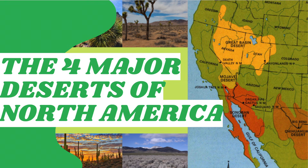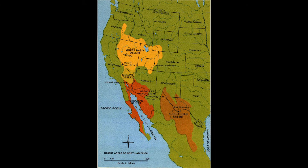North America has four major deserts: the Great Basin Desert, the Mojave Desert, the Chihuahuan Desert, and the Sonoran Desert.